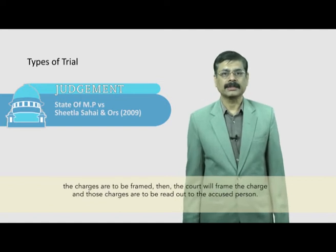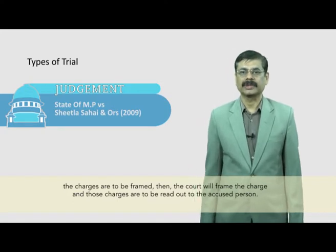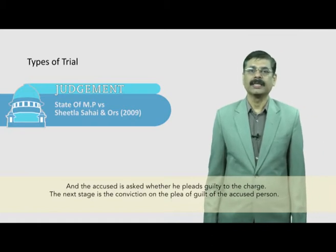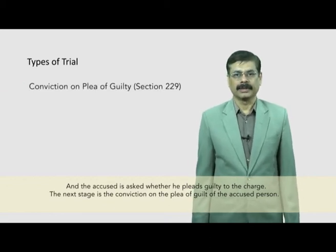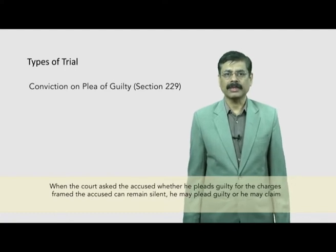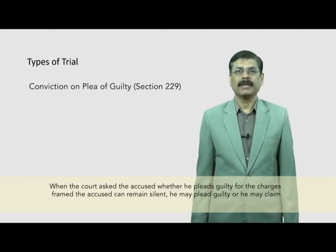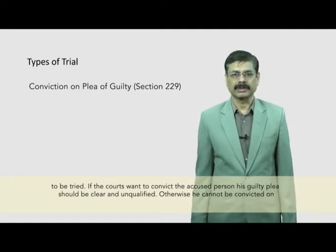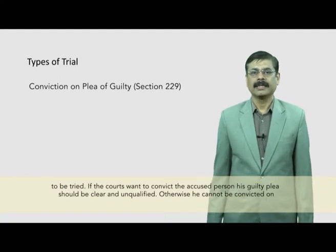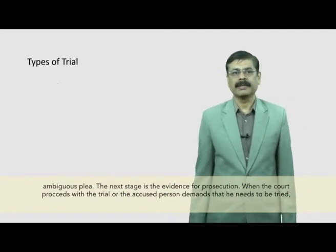If the court thinks that charges are to be framed, it will frame the charge, which is to be read out to the accused person, and the accused is asked whether he pleads guilty to the charge. The accused can remain silent, plead guilty, or claim to be tried. If the court wants to convict the accused person, his guilty plea should be clear and unqualified. Otherwise, he cannot be convicted on an ambiguous plea.